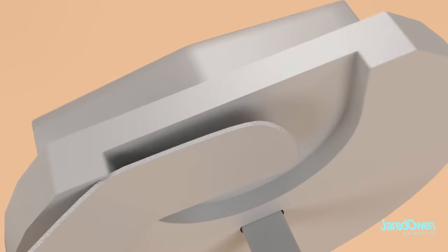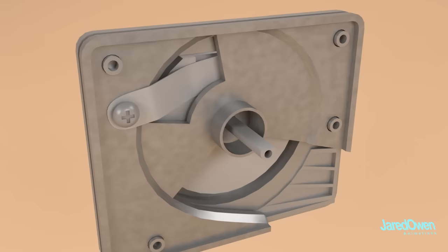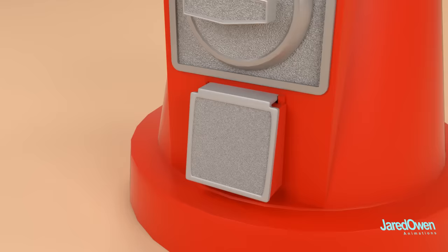When a coin is in there, that piece gets bent outward just enough so we can rotate now. Now, maybe your gumball machine is in your home or at work and you want to allow anyone to get candy. You can always remove this piece altogether. No coin, no problem. Gumballs for everyone.